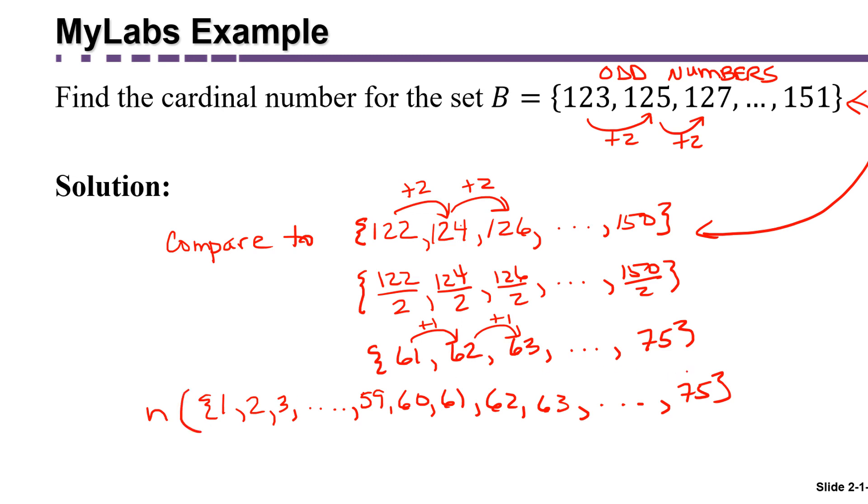But we're looking for the number of elements in the set B, which we've determined is the same as the number of elements in the set from 61, 62, to 75. So which elements is this set missing? It's missing all the elements from one up to 60. So we know it would have been 75, but it's missing 60 elements. So that means there are 15 elements in the set.